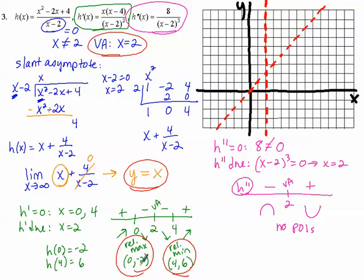Now relative max is zero, negative two. Zero, negative two. We know that's a relative max. Make that a little bit smaller print so we can fit everything in that we need to. Relative max. And relative min at four, six. One, two, three, four. One, two, three, four, five, six. Relative min.